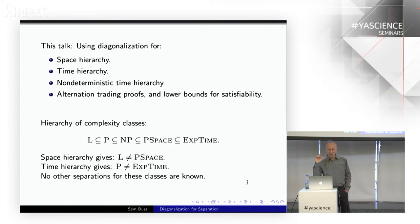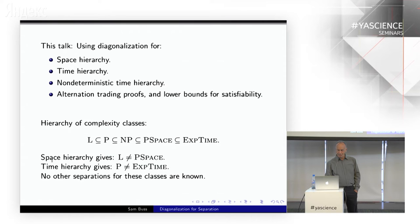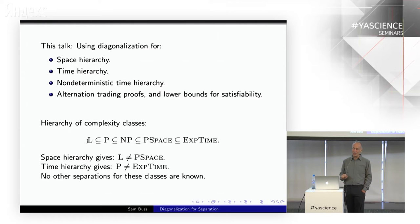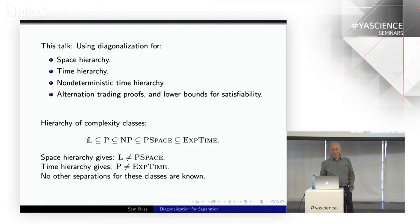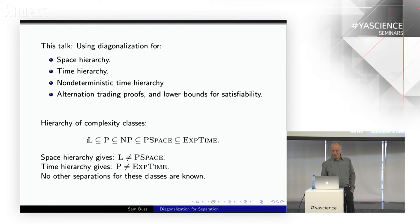Here's a plan for the talk — I'll talk about several hierarchies. Let me remind you of the complexity classes: log space at the bottom, subset of polynomial time, subset of non-deterministic polynomial time, subset of P-space, subset of exponential time. The space hierarchy tells us log space is not equal to P-space, and polynomial time is not equal to exponential time. No other separations are known for these classes. Honestly, it's a fairly embarrassing state of affairs for computer science, but that makes research in this area all the more exciting.